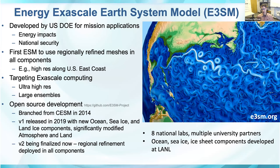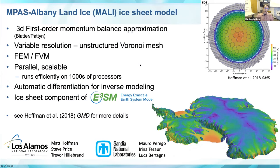E3SM is developed at eight national labs with multiple university partners. Here at Los Alamos we focus on the ocean, sea ice, and ice sheet components. The MPAS Albany Landyce, or MALI, ice sheet model is the ice sheet component of E3SM. It uses a three-dimensional first-order momentum balance approximation, a variable resolution unstructured Voronoi mesh, and is parallel and highly scalable — running efficiently on thousands of processors. It includes automatic differentiation for inverse modeling used for optimizing initial conditions, and is a joint development effort between Los Alamos and Sandia National Labs.